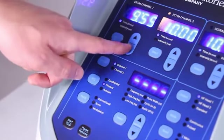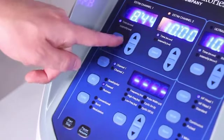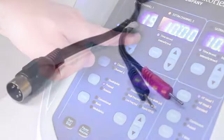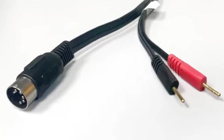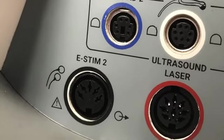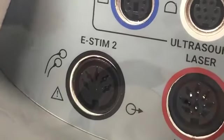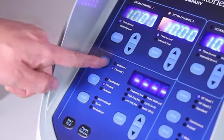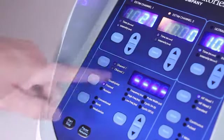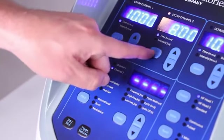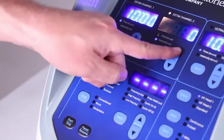A second channel of pre-mod can also be added simultaneously with the first. Plug the second muscle stimulation wire into E-stim 2 and position the second set of pads on your patient. Now select channel two, press start, and enter your time and intensity settings. Settings for channel one and channel two can be completely different from one another.